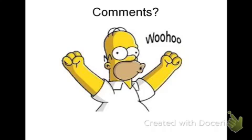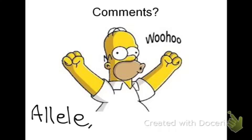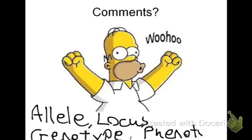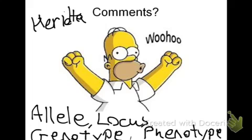So that's about it. By now we should have a pretty good understanding of a couple of our key words. Let's quickly write them down — you should have them in your Cornell notes. We learned the word allele, the word locus, the word genotype, the word phenotype, and the word heredity. All of these words are going to be really important moving forward as we begin to discuss these things.